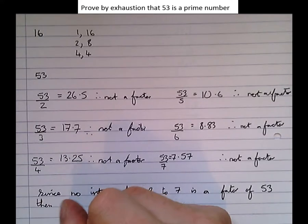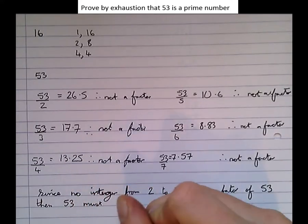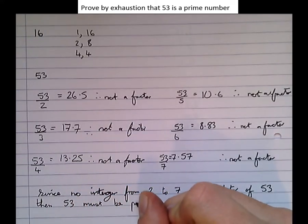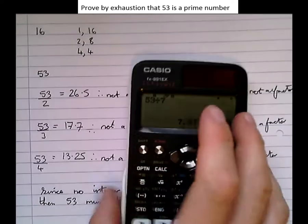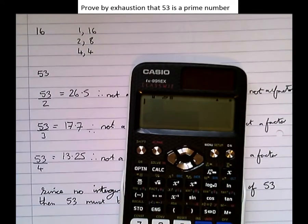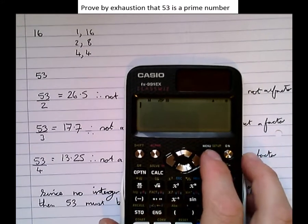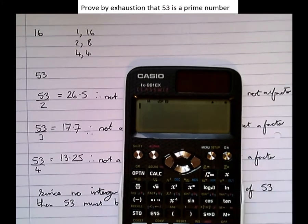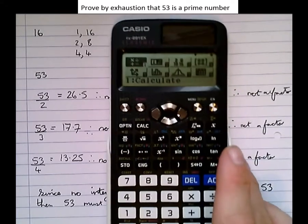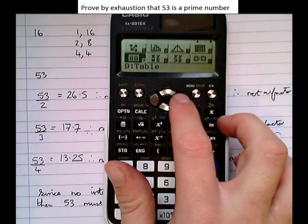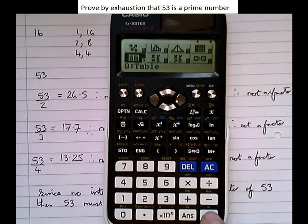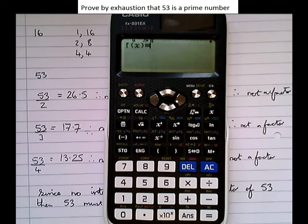We could have made that easier by using the table function on the calculator. The table function makes exhaustive lists much easier. So we're going to go to menu, scroll down till we get to the table function, which is option 9.